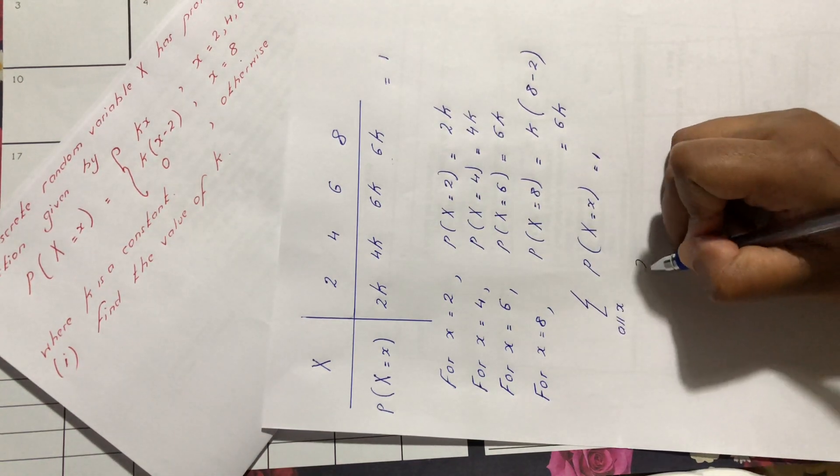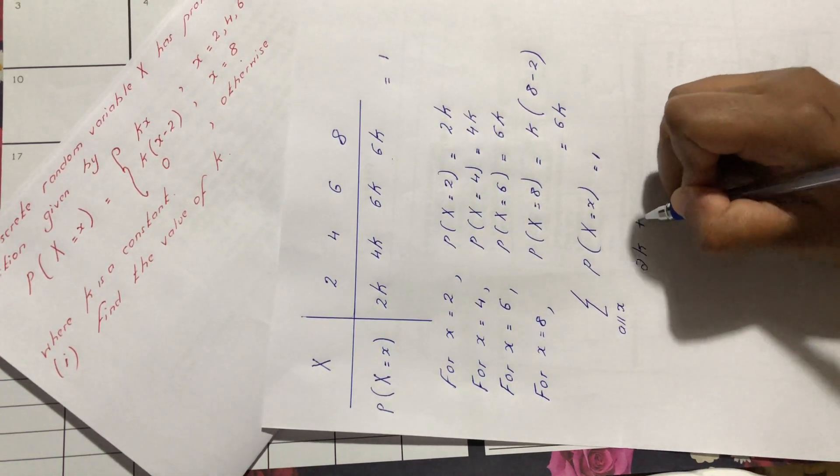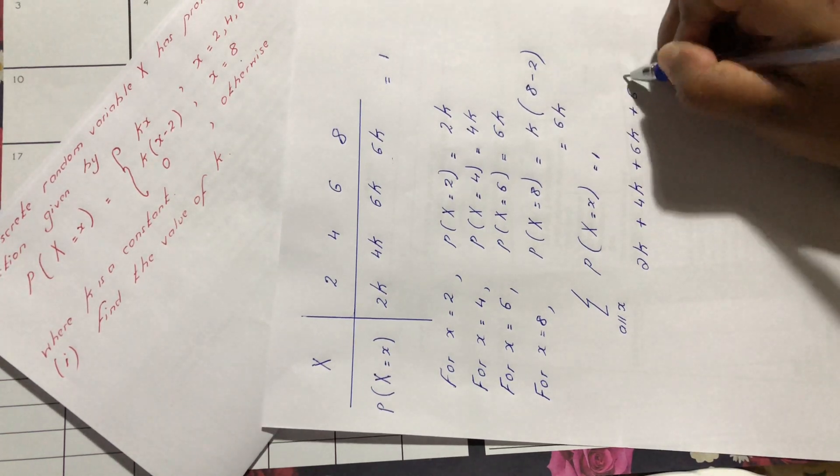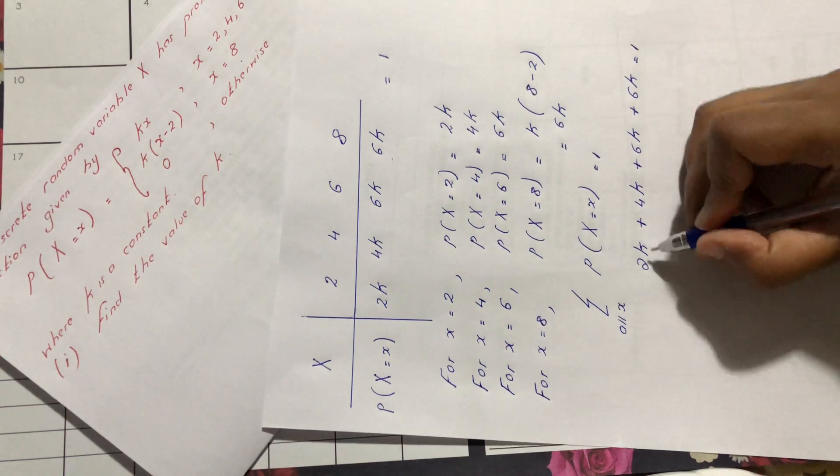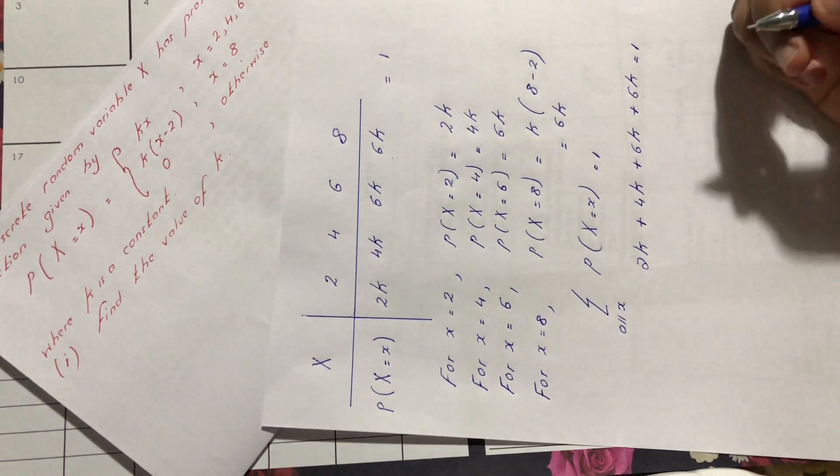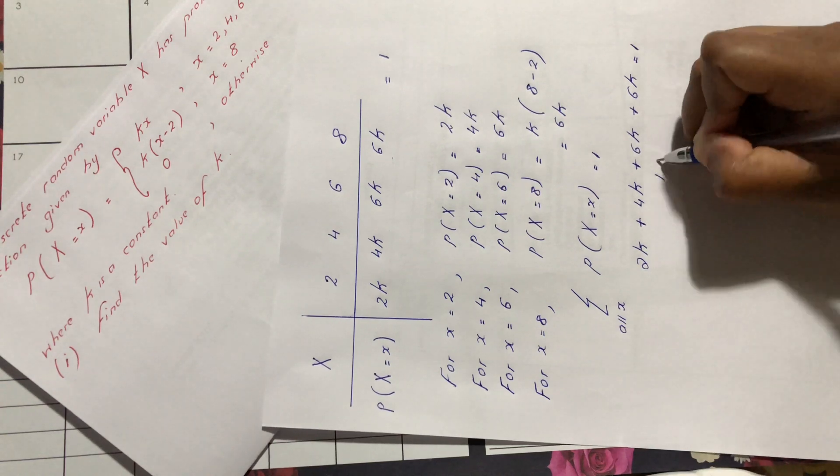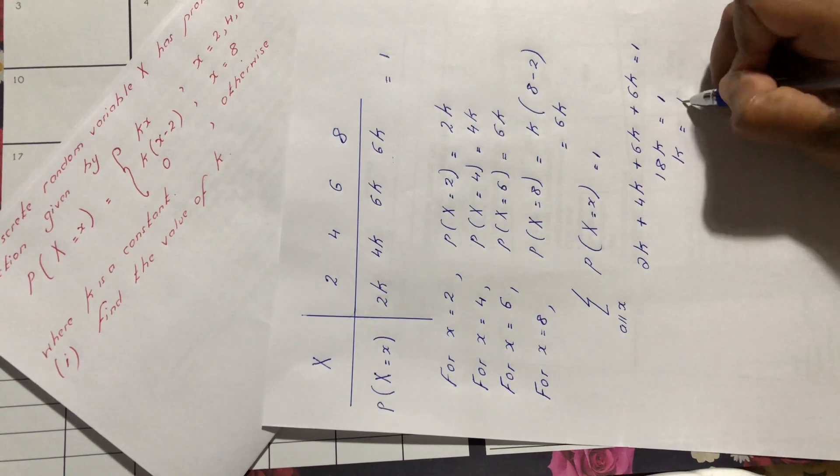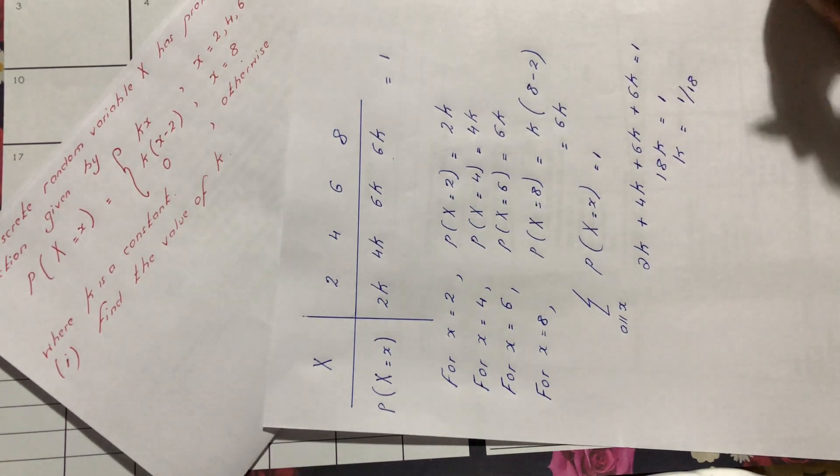So we have 2k plus 4k plus 6k plus 6k equals 1. We can add the left hand side. Since they are all like terms, we have 18k equals 1. We make k subject of formula, we have k equals 1 over 18.